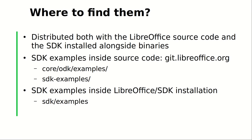Where to find them? These examples are distributed both with the LibreOffice source code and also the binary distribution. If you go to libreoffice.org, you can download both LibreOffice and the SDK. If you use the source code, you can find them under sdk/examples in the core repository. There's also a dedicated SDK examples repository at git.libreoffice.org. If you have installed LibreOffice and the LibreOffice SDK, you can find the sdk/examples folder containing all of these examples.